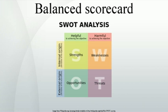Customer perspective examples include percent of sales from new products, on-time delivery, share of important customers' purchases, and ranking by important customers. Internal business processes: encourages the identification of measures that answer the question 'What must we excel at?' Examples include cycle time, unit cost, yield, and new product introductions. Learning and growth: encourages the identification of measures that answer the question 'How can we continue to improve, create value and innovate?' Examples include time to develop a new generation of products, life cycle to product maturity, and time to market versus competition.